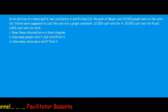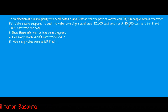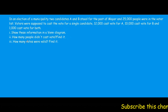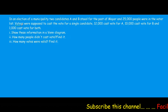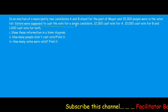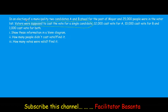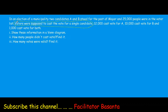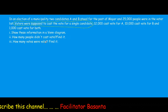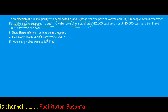Voters were supposed to cast the vote for a single candidate. 12,000 cast vote for A, 10,000 cast vote for B, and 1,000 cast vote for both. We need to show this information in a Venn diagram, find how many people did not cast vote, and find how many votes were valid. Since voters were supposed to cast vote for a single candidate, anyone who voted for both candidates has an invalid vote.